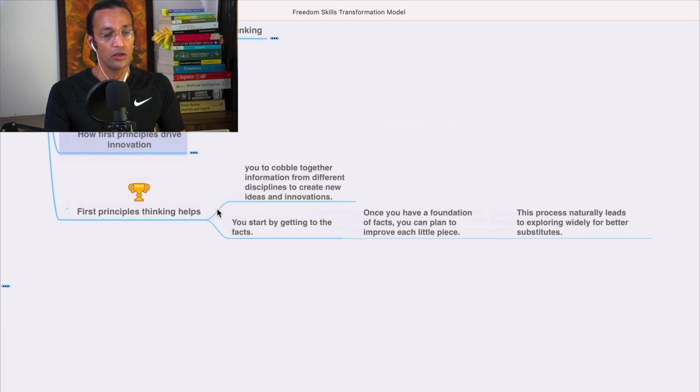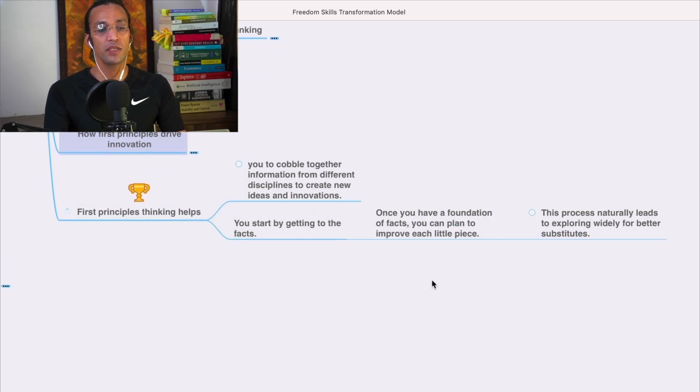First principles thinking helps you cobble together information from different disciplines to create new ideas and innovation. You start by getting to the facts. Once you have a foundation of facts, you can plan to improve each little piece. This process naturally leads to exploring widely for better substitutes.